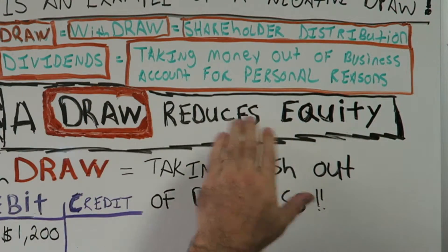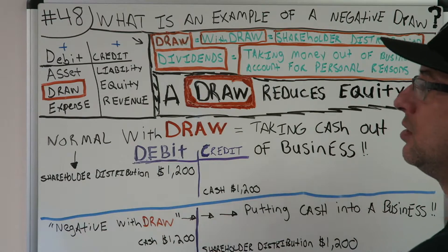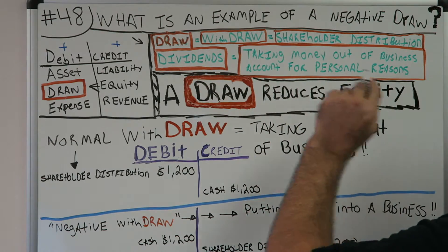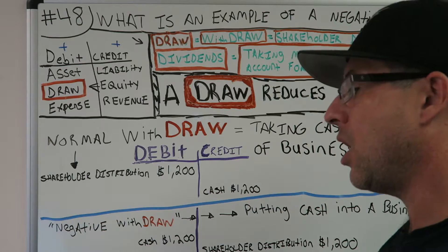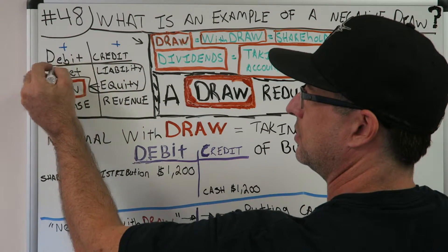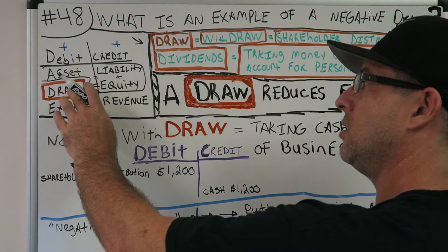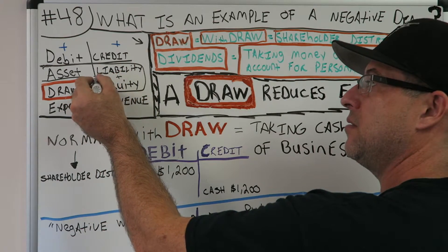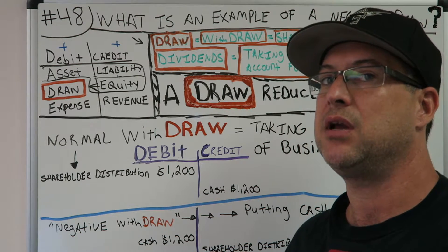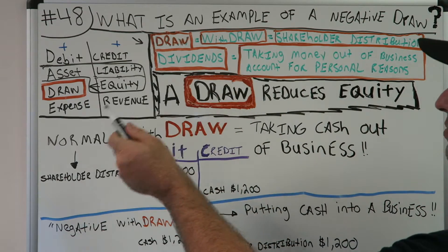A draw reduces equity — that's a normal draw. A shareholder distribution, a dividend — they would show up on the balance sheet, and a balance sheet is assets equal liabilities plus equity. A draw is taking money that's in the business out of the business. It's not an expense, it's not a revenue — it's just money that you're taking out, and all the situations are different, but that's what a normal draw is.